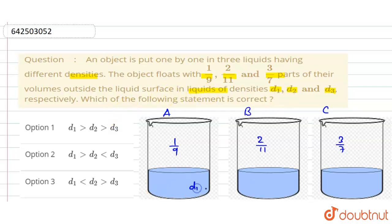Let the density be d1, and this is d2, and this is d3 according to the question. And three objects put one by one. So consider this is one object, and this is put in and dipped 1/9 of its volume. And this object is 2/11, and this is 3/7.